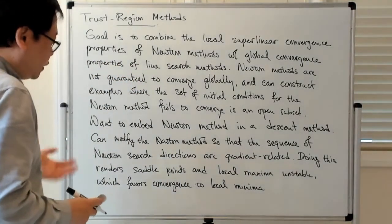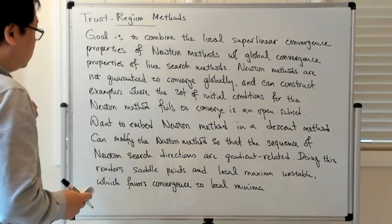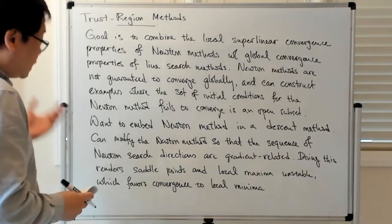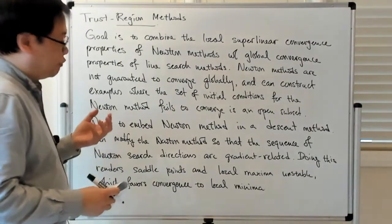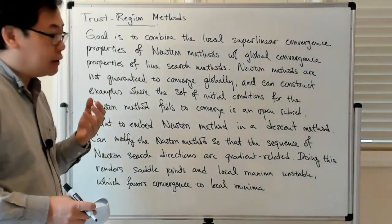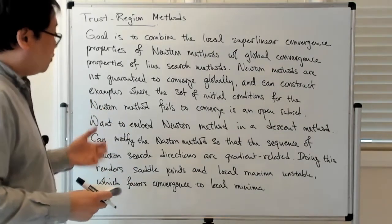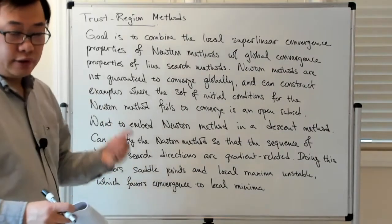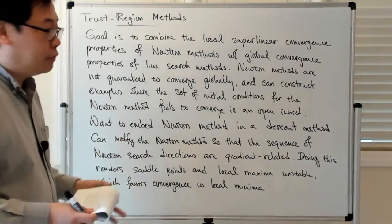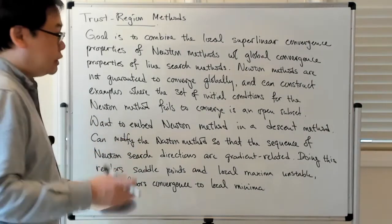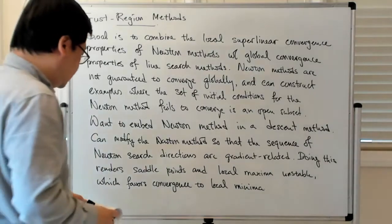The desire to combine the favorable properties of line search methods — their global convergence — with Newton methods and their super-linear, often quadratic convergence rates, leads to what we call trust region methods.